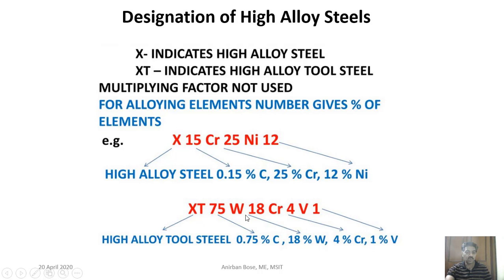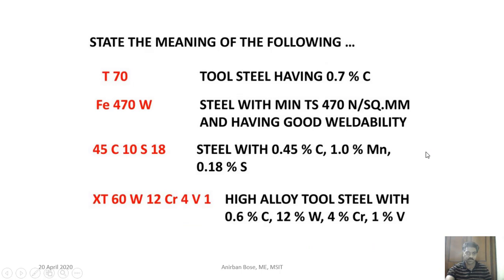Another example: XT75W18Cr4V1. 'XT' indicates it is a high alloy tool steel. 75 gives carbon percentage as 0.75% (100 times multiplied). Tungsten is directly 18%, chromium is directly 4%, and vanadium is 1% — no multiplying factors are used for alloying elements in high alloy steels.